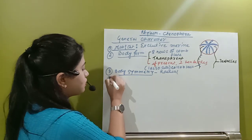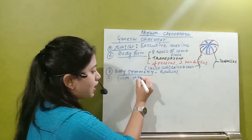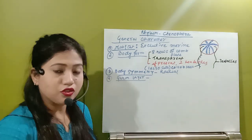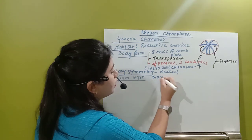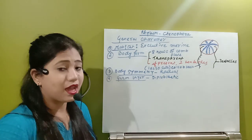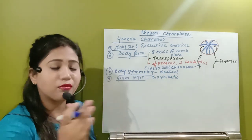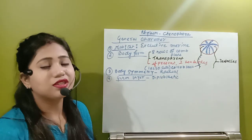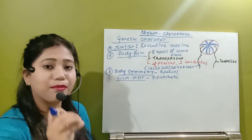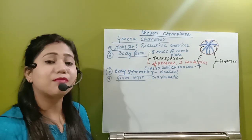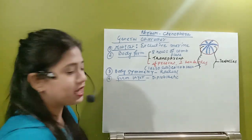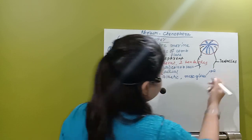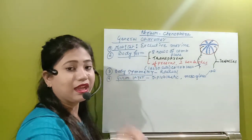The next characteristic is about their germ layer. This is a very important point — their germ layer count is two, like the Cnidaria. So Cnidaria are diploblastic, and this organism is also diploblastic. But unlike Cnidaria, which have outer ectoderm, inner endoderm, and mesoglia in the middle, in case of Ctenophores, the ectoderm and endoderm are present, but the middle jelly-like matrix mesoglia contains some different types of cells. The mesoglia has a totipotent cell with irregular surface area like an amoeba — these are called amoebocytes.